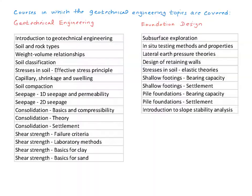At the undergraduate level, in what courses are the topics of geotechnical engineering covered? Typically, in most programs, you will have two courses. The first course is typically called geotechnical engineering, and sometimes called soil mechanics. The second course is typically called foundation design, or sometimes foundation analysis. In the first course, you learn the basics of soil mechanics and some aspects of the analysis used in the design of foundations and other geotechnical structures. The second course is typically devoted to the design aspects. The topics in these lists vary from school to school and program to program.